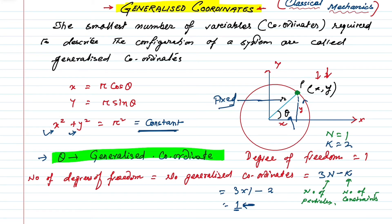From this we can say that generalized coordinates are the coordinates obtained after eliminating the constraints — because we are subtracting the constraints. The remaining coordinates after elimination of constraints are the generalized coordinates. Let me take one more example.